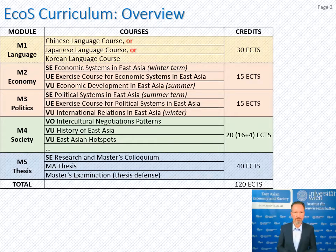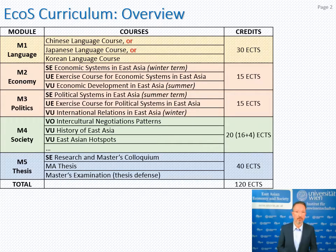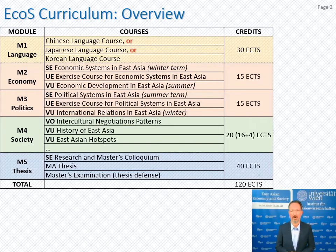M1 is language. M2 and M3 are our economy and politics modules. They are different from M4 in that they include mandatory courses, seminars, term papers, and all that. M4 we called it "society" because that's really the broadest of the modules that we have.